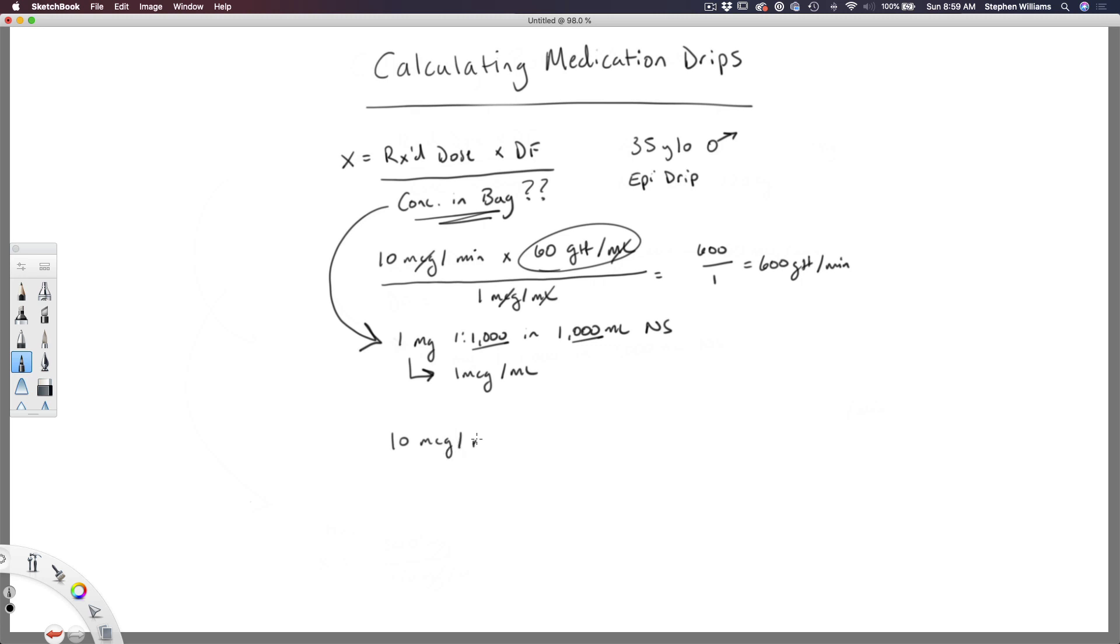So if we do that and we work it out, we see that we have 10 mics per minute times 10 drops per mil over our 1 mic per mil concentration. That calculates out to 100 over 1, equaling 100 drops per minute.